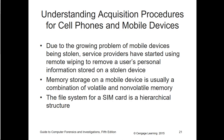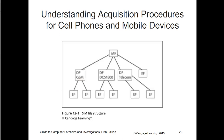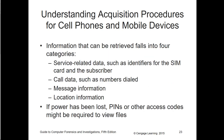Memory storage on a mobile device is a combination of both volatile and non-volatile. Volatile memory is lost if powered off; non-volatile is long-term storage for photos, videos, and similar content. The file structure on a SIM card is hierarchical, like a traditional operating system. Information retrieved from a mobile device normally falls into four categories: service-related, call data, message, or location information. If power has been lost, PINs or other access codes may be required. After iOS 10, iPhones strongly encouraged setting up passcodes or fingerprint readers to unlock the device.